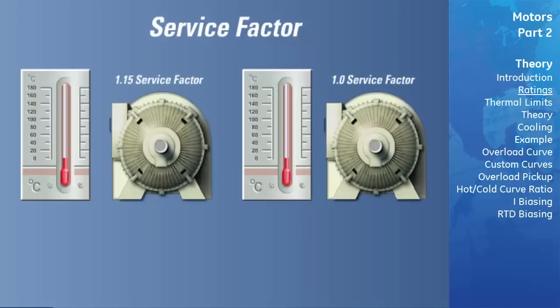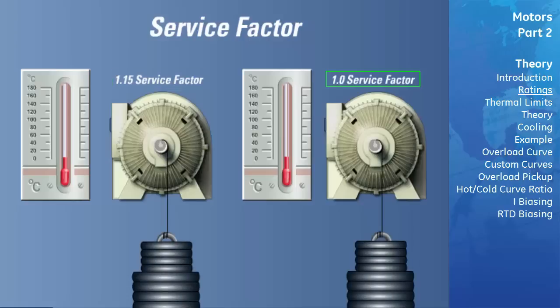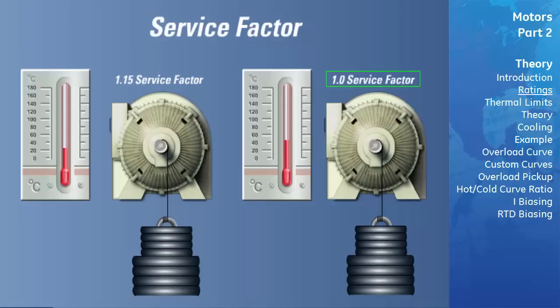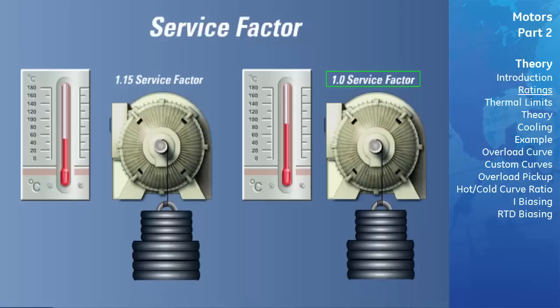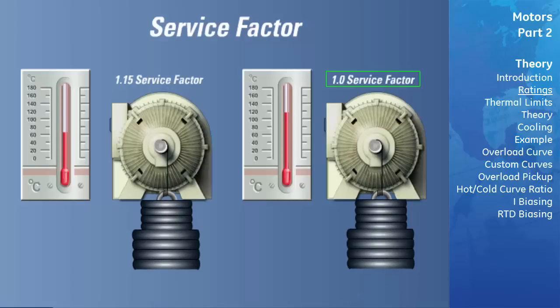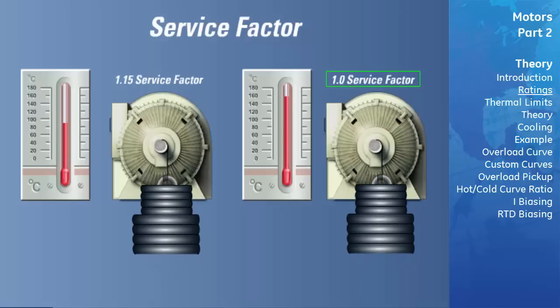For a given insulation, a motor with a 1.15 service factor has a lower temperature rise than a motor with a service factor of 1.0. This allows the motor to operate close to the service factor without exceeding rated temperature limits. When voltage and frequency are maintained at nameplate values, the motor may be overloaded up to the horsepower obtained by multiplying the nameplate horsepower by the service factor. At a service factor load greater than 1.0, efficiency, power factor, and speed will differ from the nameplate, but locked rotor current and breakdown torque remain the same.